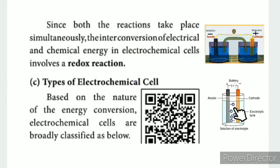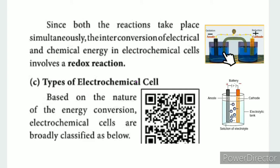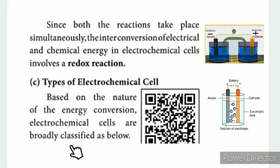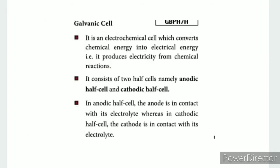This is the galvanic cell and this is the electrolytic cell. The galvanic cell involves chemical energy and electrical energy. In the electrolytic cell, there is a current supply with electrical energy and chemical energy. Based on the nature of the energy conversion, electrochemical cells are broadly classified into two types.